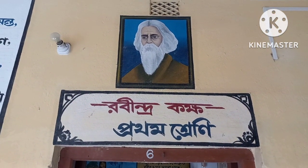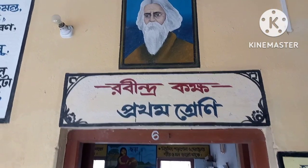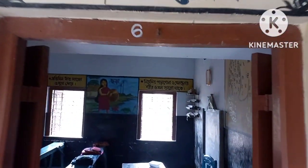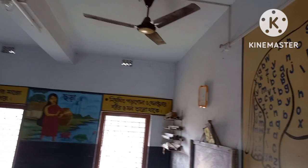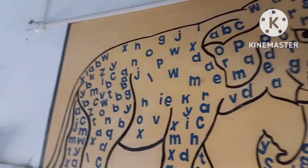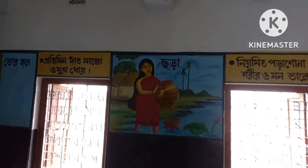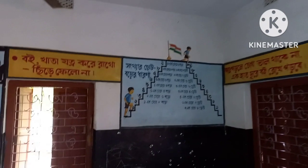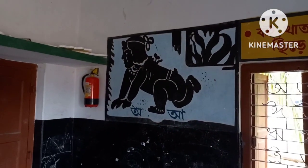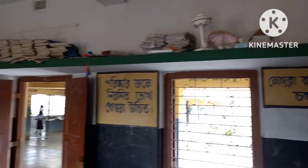At this point we have Ravindra Kaksha, reserved for Class 1 — room number six. The room is well decorated and students get the opportunity to learn right from the walls themselves. They not only learn from their books and copies, but also from the wall whenever they look at it.